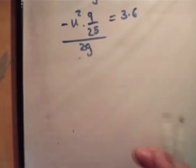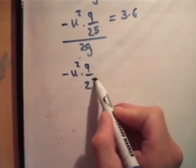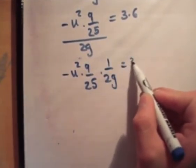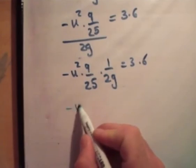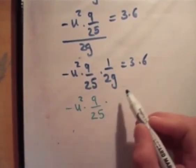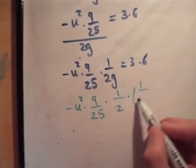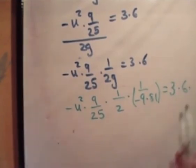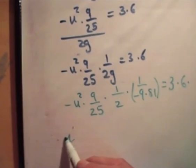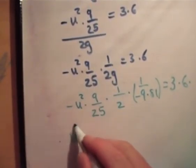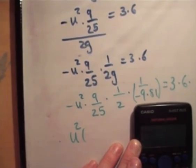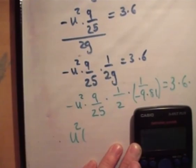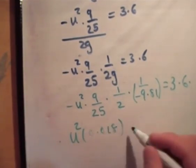Like so, so turn this upside down and multiply. Like so. So, that's a 9 and that's a g, so you can't cancel those. So, let's see what we have here. It means we have minus u squared times 9 over 25 times 1 over 2 times 1 over minus 9.81 is equal to 3.6. So, u squared times, let's see now if we can do this in my calculator. So, we have 9 divided by 25, multiplied by 0.5, which is 1.5, multiplied by 1, divided by 9.81 is equal to 0.01. 0.018 is equal to 3.6.